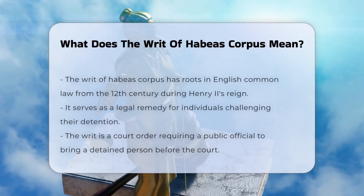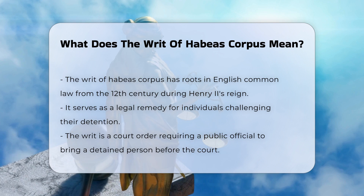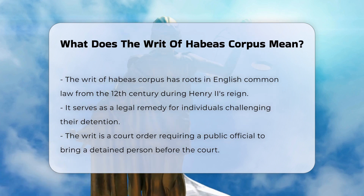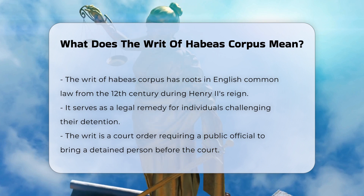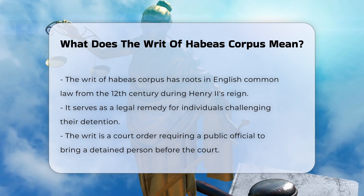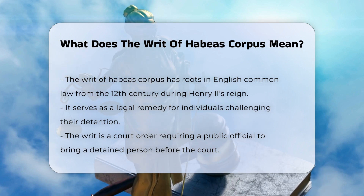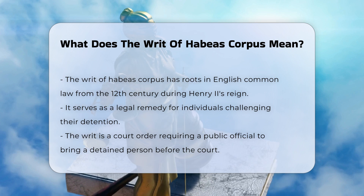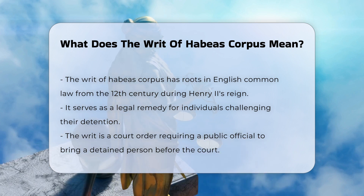The writ of habeas corpus is a legal remedy that has its roots in English common law, dating back to the 12th century during the reign of Henry II. This writ is essentially a court order that demands a public official, such as a warden, to bring a detained person before the court. The purpose is to determine whether the detention is lawful and to provide the detainee an opportunity to challenge their confinement.